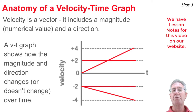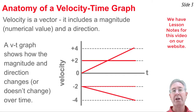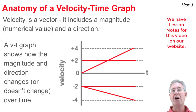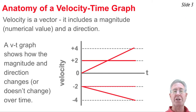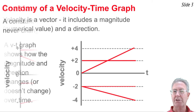Numbers on these graphs represent actual velocity values, like a velocity of positive 2 meters per second, or a velocity of negative 2 or negative 4 meters per second. When talking about velocity-time graphs, we look at where the line is located and whether the line is diagonal or horizontal. That's what's coming up in the next few slides.